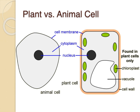Plant and animal cells compared: the animal cell on the left contains a nucleus, cytoplasm, and a cell membrane. The cell membrane is also found in plant cells but is underneath the cell wall. The plant cell on the right has organelles found only in plants: the chloroplast, the central vacuole, and the cell wall.